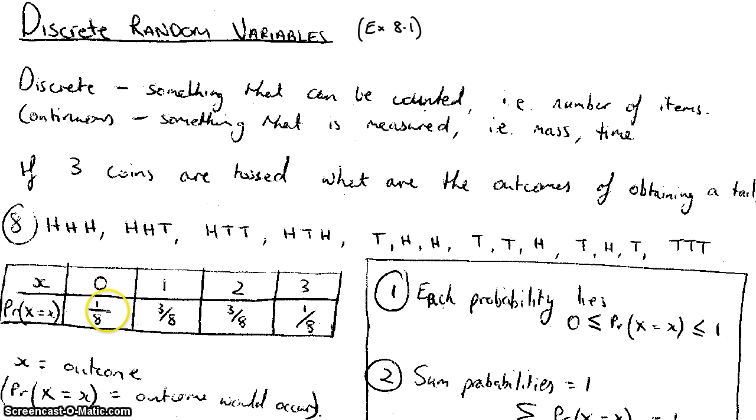So what's the probability of zero outcomes happening, one tail coming up, or two tails, or three tails? I can just go through my list up here and recognize that there's only one chance of no tails coming up, and that's one on eight. There's one in eight chances of three tails turning up, and so I end up getting this distribution here. That is all the outcomes of obtaining a tail.